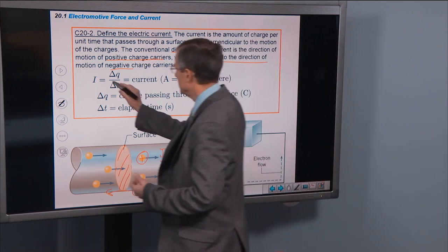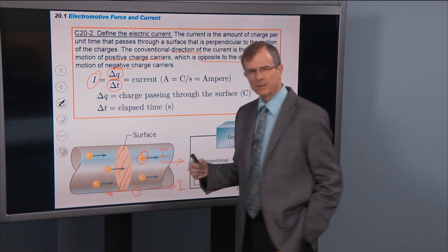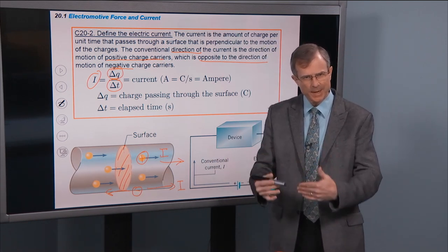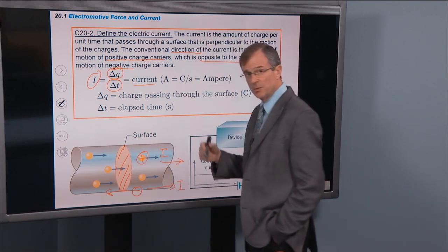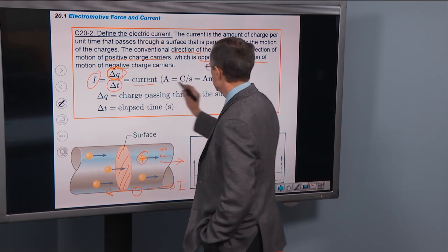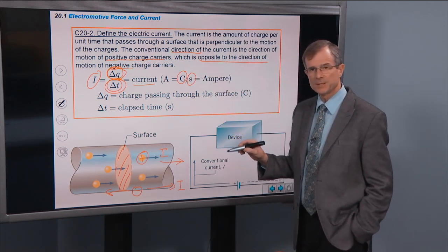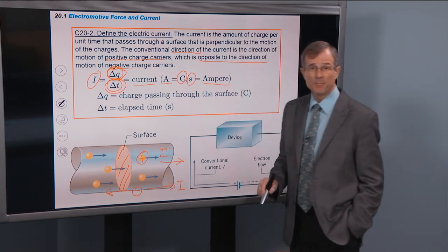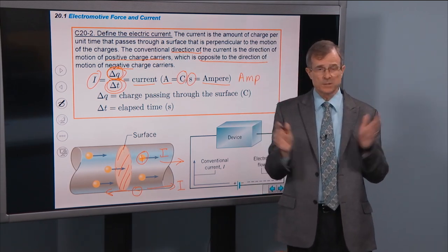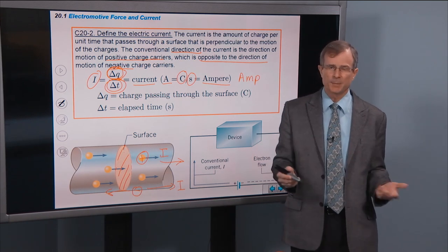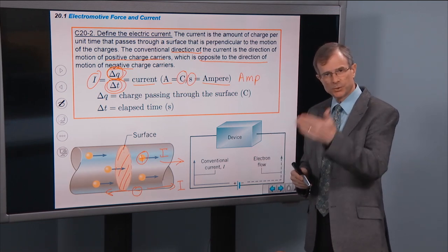Equation-wise, the current is denoted by the letter I. It's charge divided by time: delta Q divided by delta t. Delta Q is the amount of charge passing through that surface area, and delta t is the elapsed time. The units of current are coulombs divided by seconds, and a coulomb per second is defined as the ampere, or often called the amp. A 20-amp or 15-amp circuit in your house is exactly this — a coulomb per second.